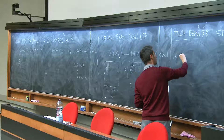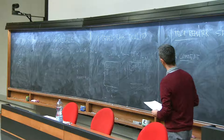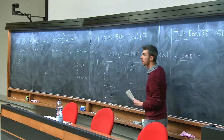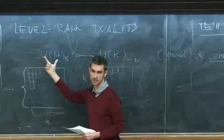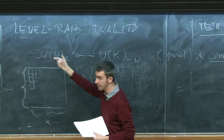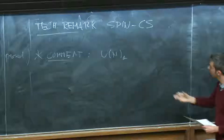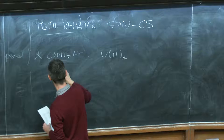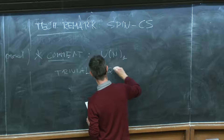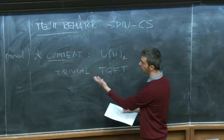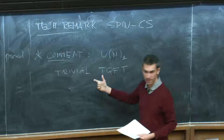There is a special case here: if you take n equal to 1, then SU(1) is the trivial group with just the identity, so this theory becomes trivial. And so what this duality tells us is that the theories U(N) at level 1 are a bit special. In fact, these are examples of what we can call trivial topological field theories — theories for which there is a single gapped vacuum on any spatial manifold.